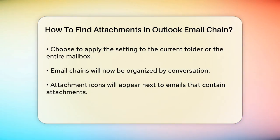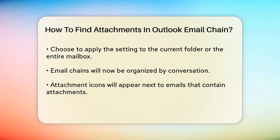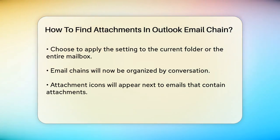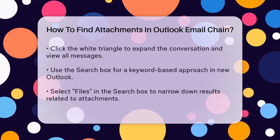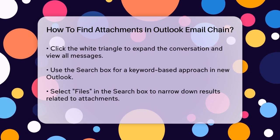You'll see an attachment icon on the right side of the mailing list for emails that have attachments. To find the specific attachment you're looking for, click on the white triangle to expand the current conversation. This will show you all the messages in the thread, and you can easily spot the attachments in the original messages.